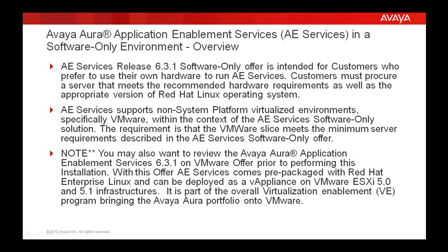Note that you may also want to review the Avaya Aura Application Enablement Services Release 6.3.1 on VMware Offer prior to performing this installation. With this offer, AE Services comes prepackaged with Red Hat Enterprise Linux and can be deployed as a v-appliance on VMware ESXi 5.0 and 5.1 infrastructures. It is part of the overall virtualization enablement program bringing the Avaya Aura Portfolio onto VMware.